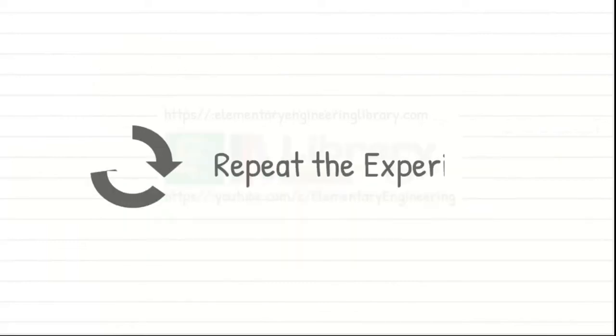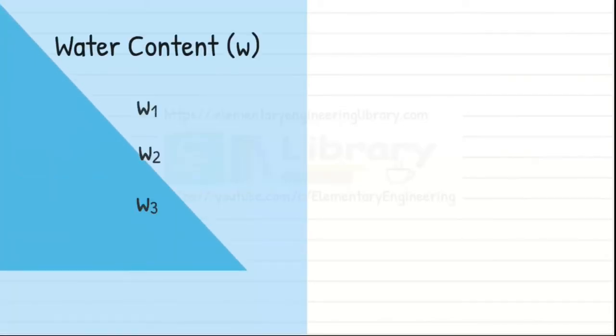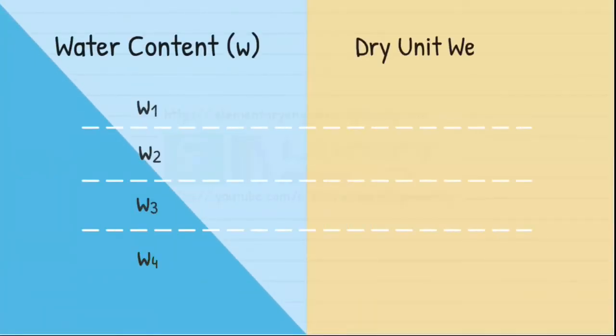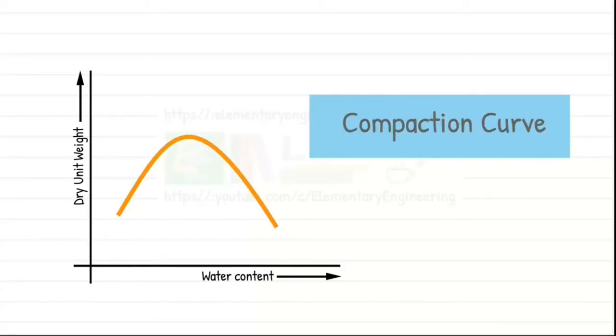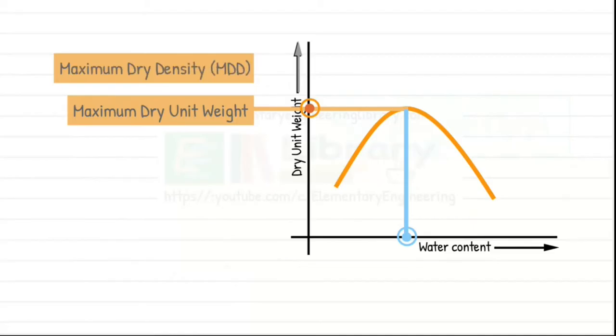We repeat the experiment few times by increasing water content every time and obtain our respective dry unit weights. We plot our obtained data in a curve which is known as compaction curve. The water content at which the soil attains its maximum dry unit weight or maximum dry density is called optimum moisture content.